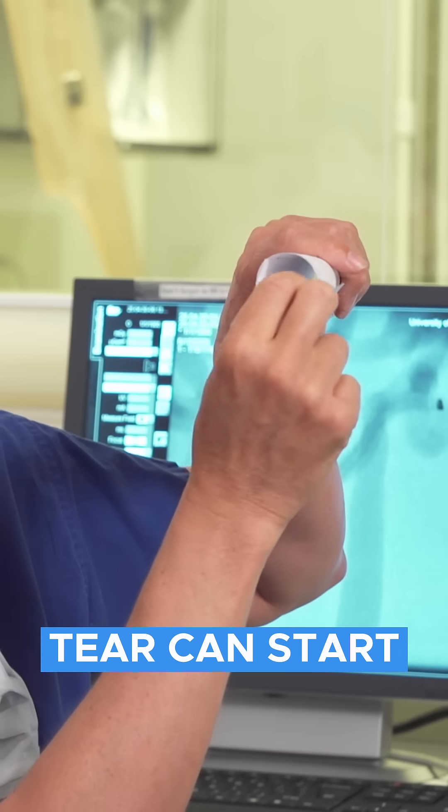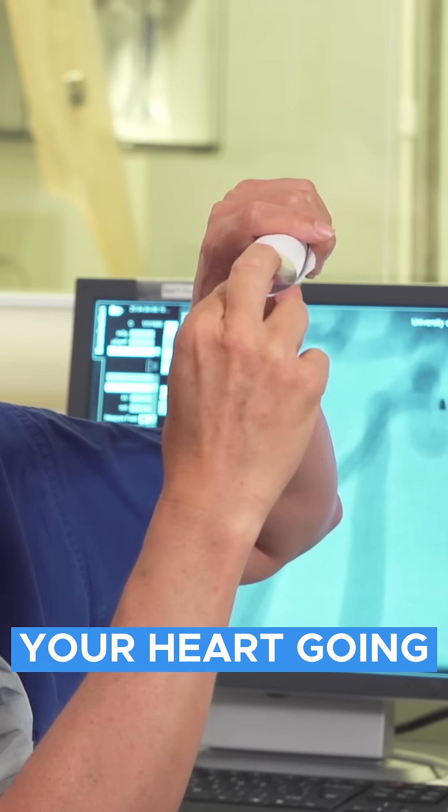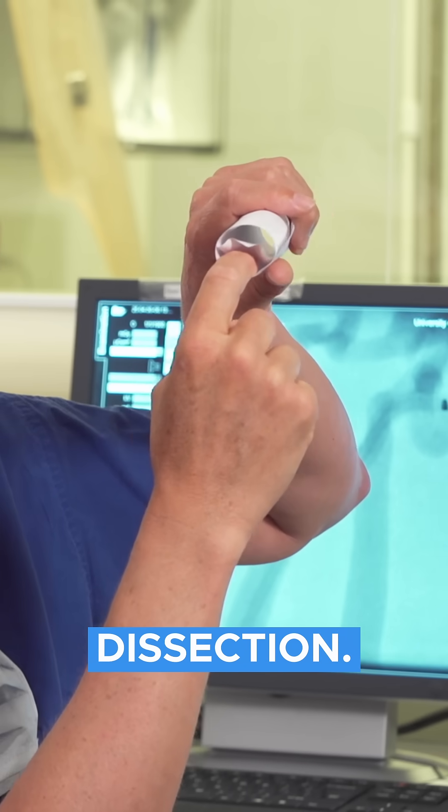that little tear can start to develop and the pulsations of the blood from your heart going up that pipe can cause a dissection.